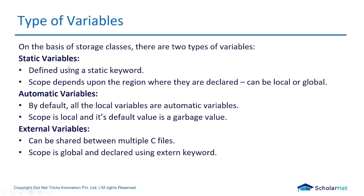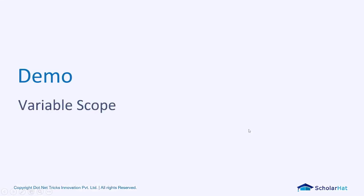For declaring a static variable we use the 'static' keyword, and for an external variable we use the 'extern' keyword. These are reserved keywords - you cannot name a variable 'static' or 'extern'. Now we're going to jump to VS Code to see examples of local and global variables, including some examples that will produce errors.